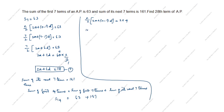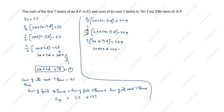Simplifying: 14 divided by 2 is 7. So 7 into (2a plus 13d) equals 224. Dividing both sides by 7: 2a plus 13d equals 32.